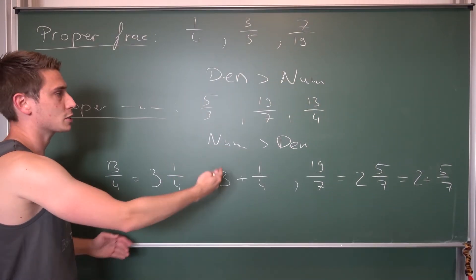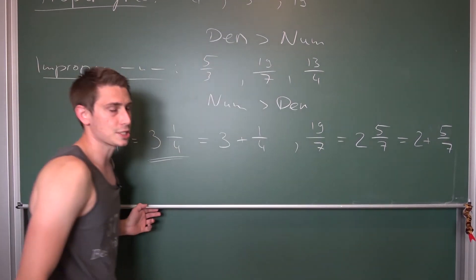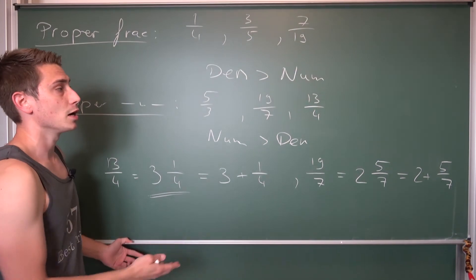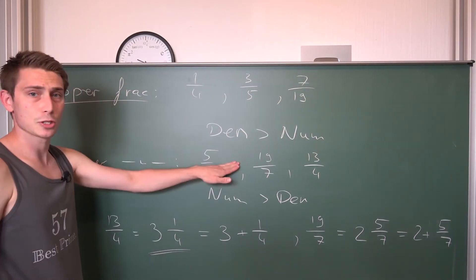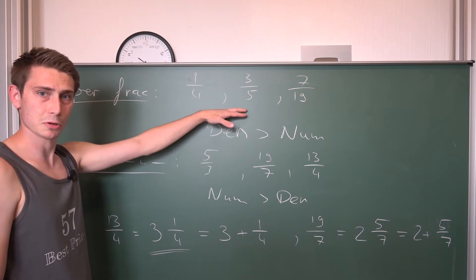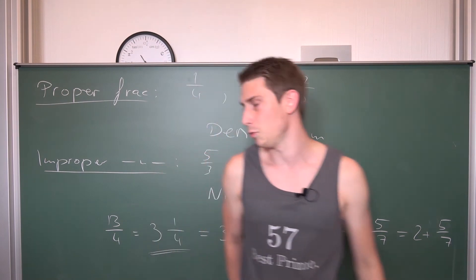For improper fractions, we have that we can always express an improper fraction using mixed fractions in some way. This is the core difference between proper fractions and improper fractions. They can be turned into mixed fractions because they are between 0 and 1 or 0 and negative 1 in some way.